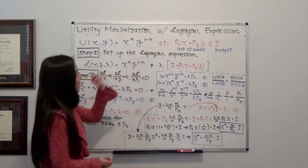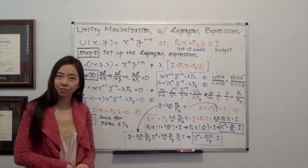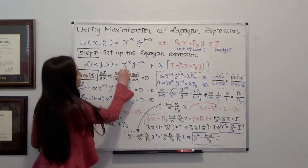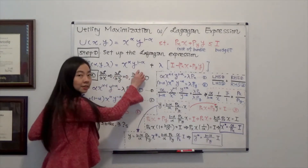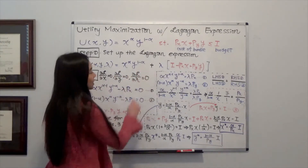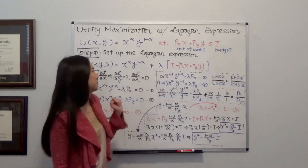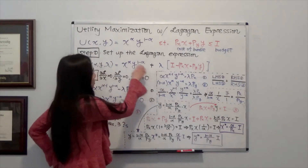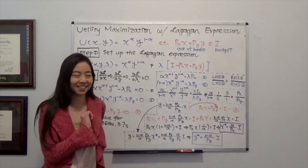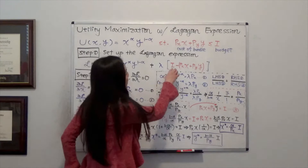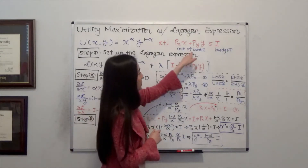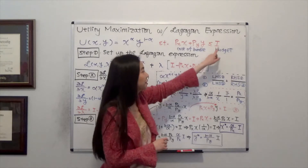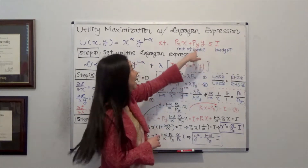The first step is to set up the Lagrangian expression, where the Lagrangian function equals the utility you are trying to maximize plus lambda times your budget constraint. Notice that it's plus here because we are trying to maximize our utility, and also because the cost of the bundle must be less than or equal to the budget, so we take the larger one: budget minus cost of the bundle.